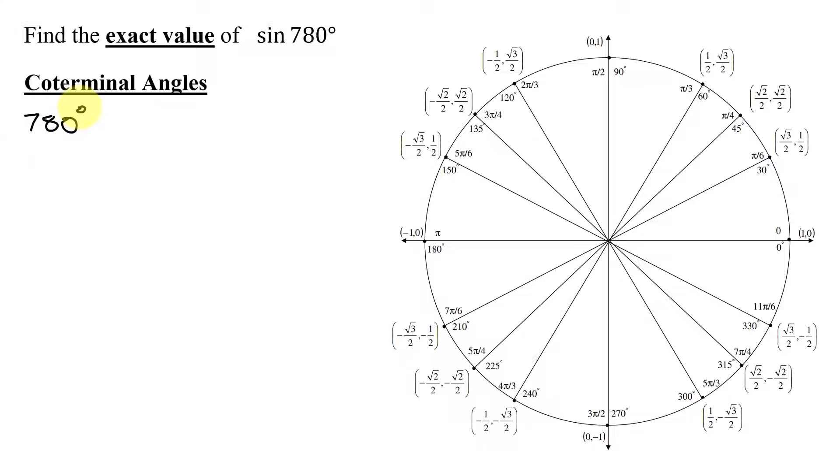And I want a smaller angle. So I'm going to subtract 1 revolution. And as I'm in degrees, that's 360 degrees. And 780 degrees minus 360 degrees is 420 degrees.